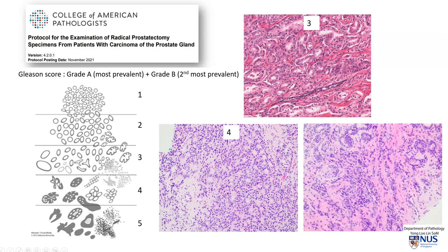In yet another case, we can see some benign bilayered prostatic glands, but where the tumor is, there is no gland formation. Instead, we see some cords of malignant cells. This falls into Gleason grade 5. So for example, if the most prevalent area is grade 3 and the second most prevalent area is grade 5, then the Gleason score would be 3 plus 5 equals 8. Gleason score is a very important prognostic feature in prostatic adenocarcinoma — the higher the score, the worse the prognosis.